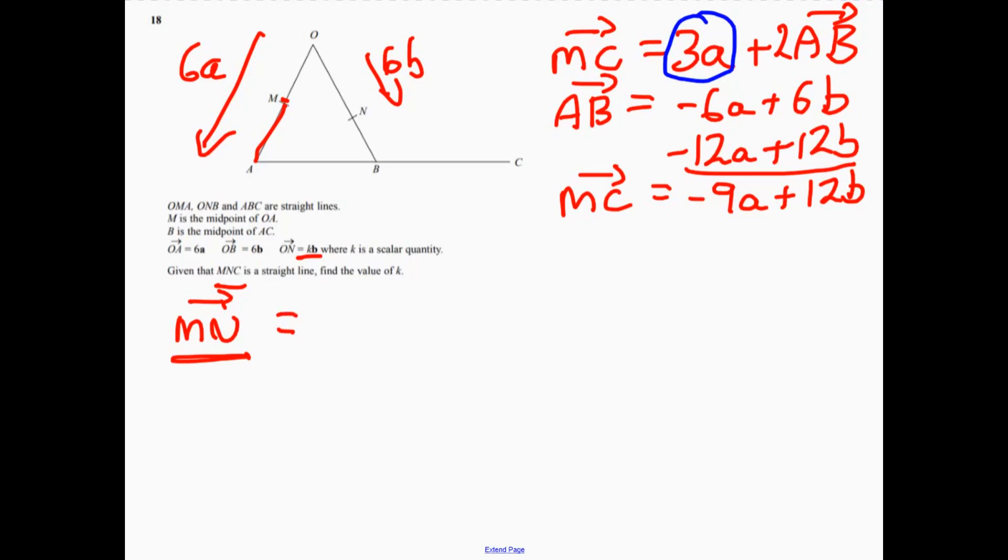It's going to equal minus 3a. I'm actually going... Let's do it in a colour for you so you can see that bit. I'm going that way. And then we're going to come down that way. And then plus some b. Plus something b.